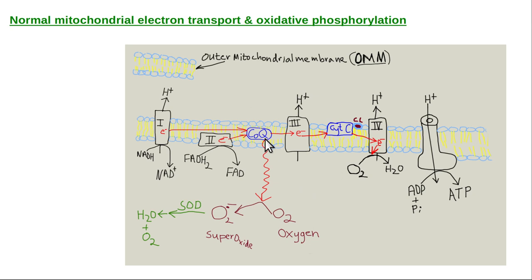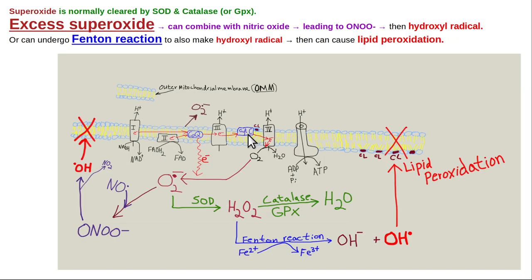Occasionally, electrons leak and bind to oxygen in the mitochondrial matrix, producing superoxide free radicals. In small amounts, mitochondria handle this well with the enzyme superoxide dismutase. However, if excessive, superoxide can overwhelm this enzyme, and in the presence of excessive free iron, produce hydroxyl radicals via the Fenton reaction, which can trash the inner mitochondrial membrane through lipid peroxidation.